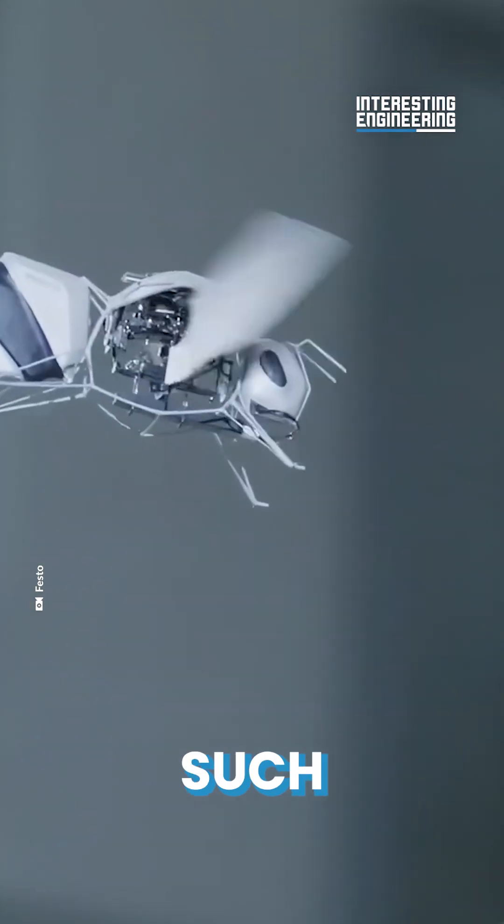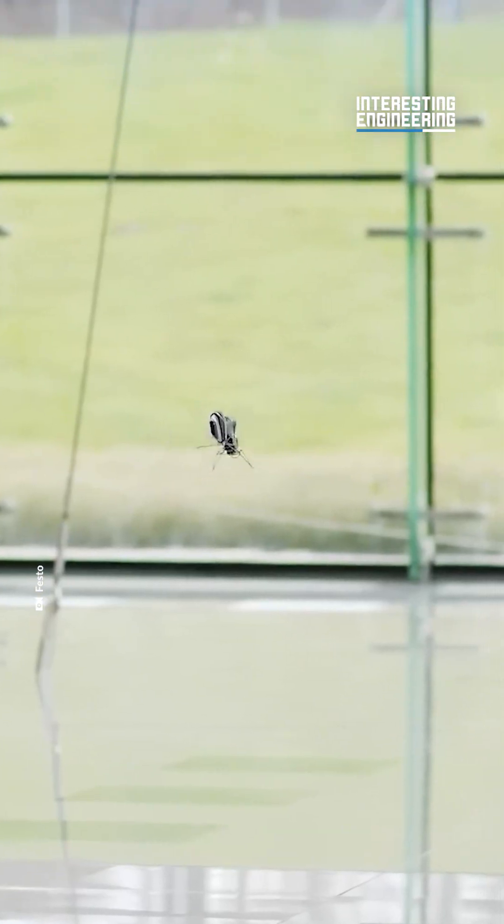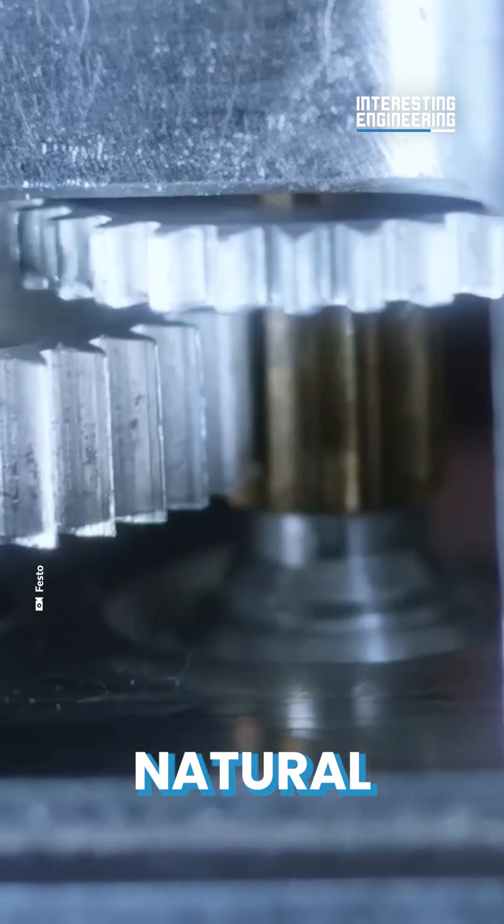But Festo went beyond such engineering challenges in its biomimicry. It created robotic autonomous bees that could swarm in a natural manner.